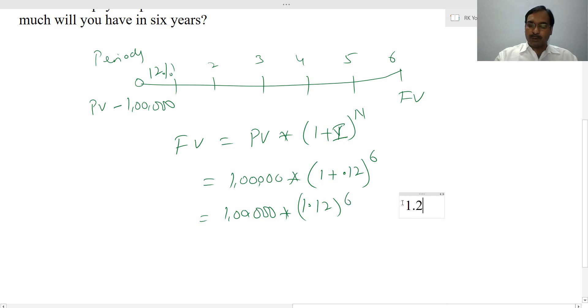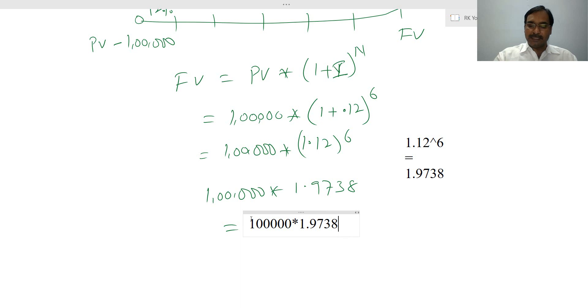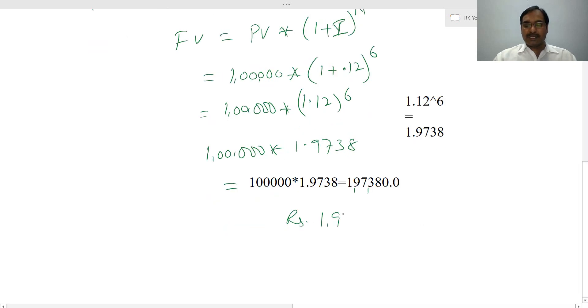1.12 to the power of 6, this is 1.9738. Then this equals 1,00,000 into 1.9738. So this is Rs. 1,97,380 as your future value.